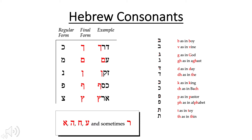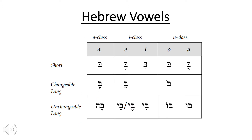Typically, we only worry about bet/veit and peh/feh, but some prefer to pronounce all of these differently. Hebrew vowels: A class, I class, U class — short, changeable long (which will reduce in certain cases), and unchangeable long that will not reduce because of the presence of the helping consonant. Memorize this chart well.